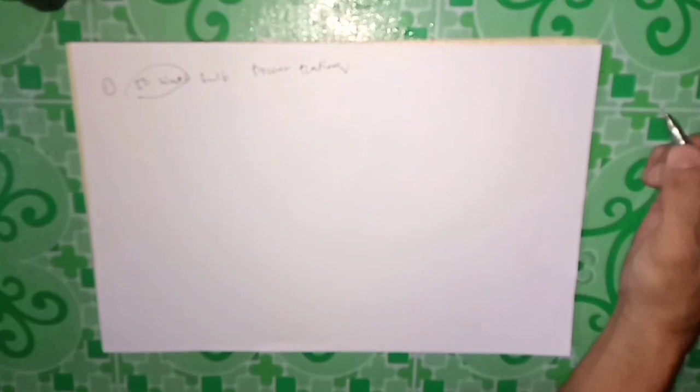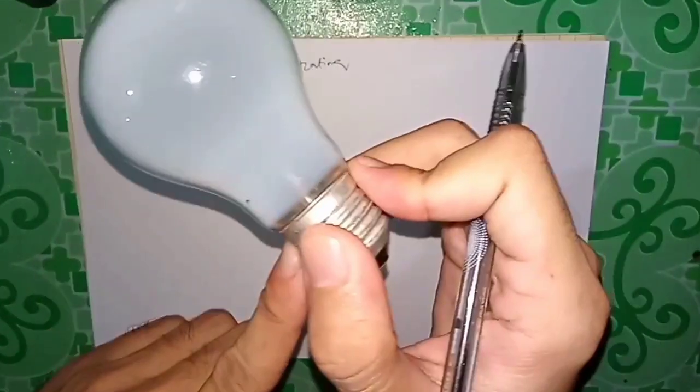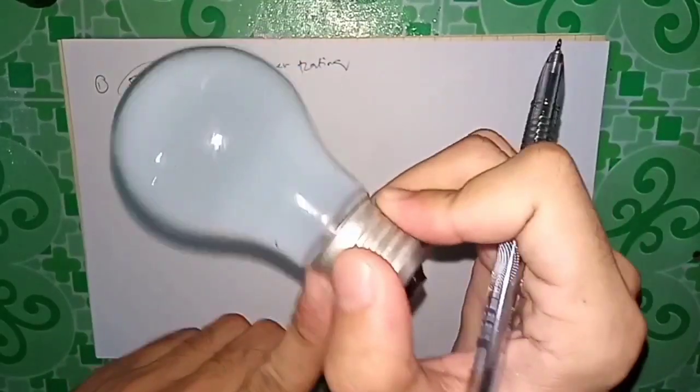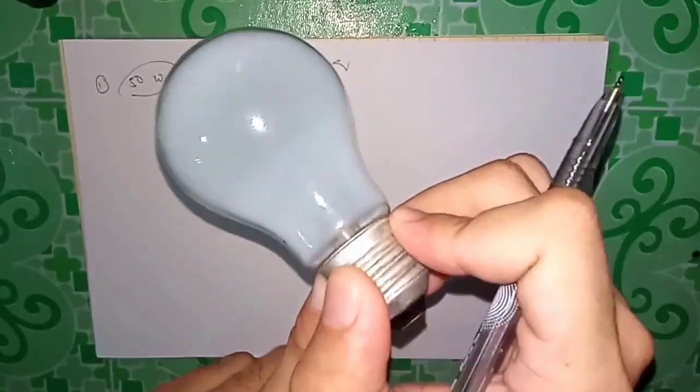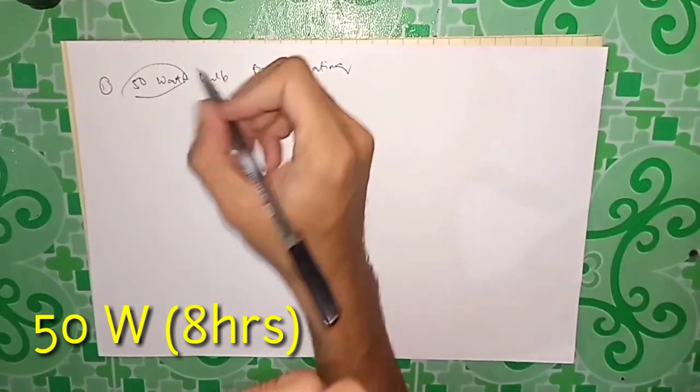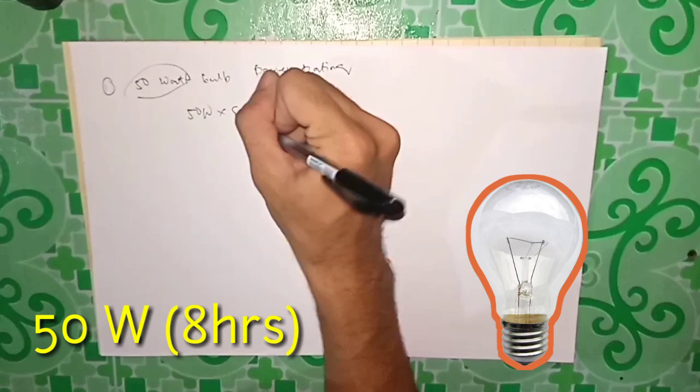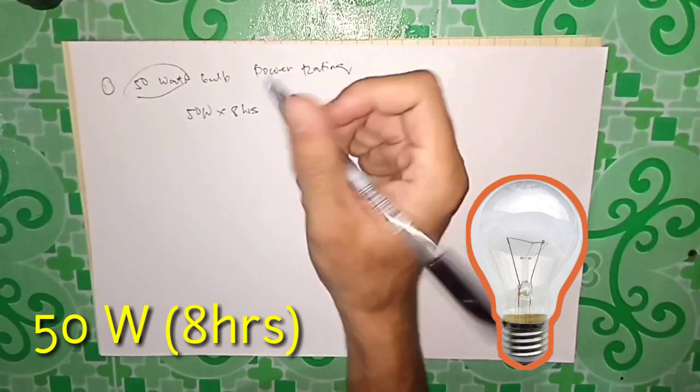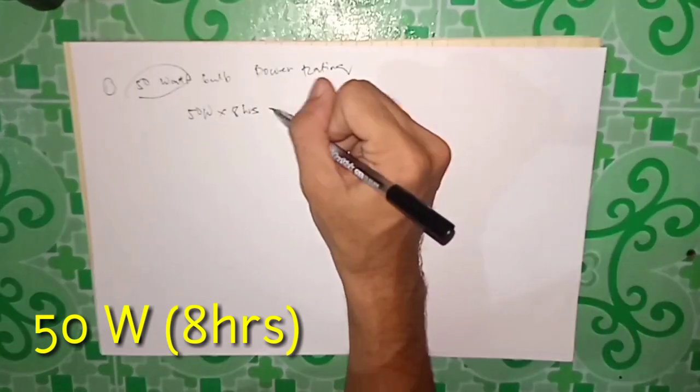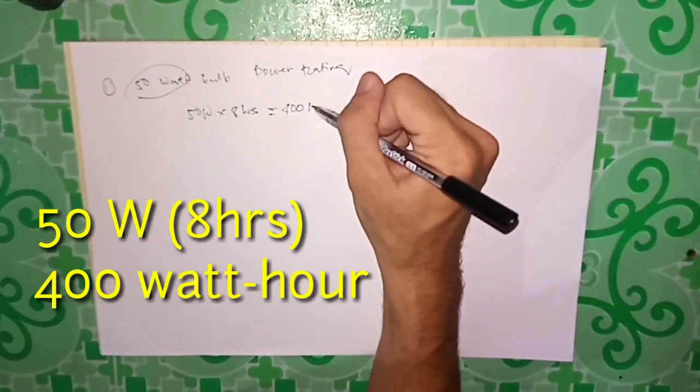For example, if you use this bulb for 8 hours at night, multiply 50 watts times 8 hours, and that will be 400 watt-hour.